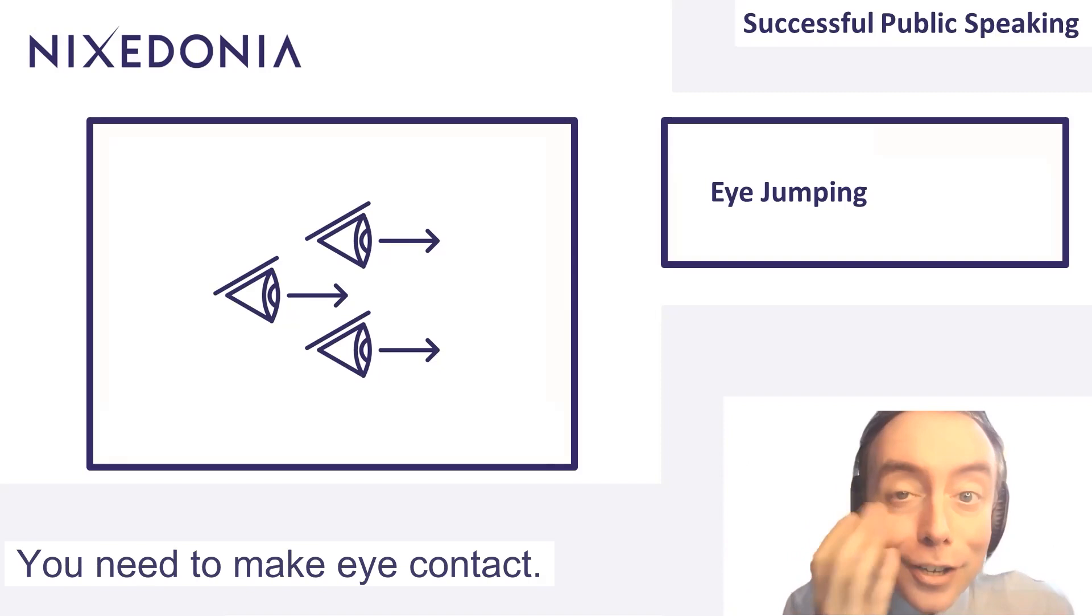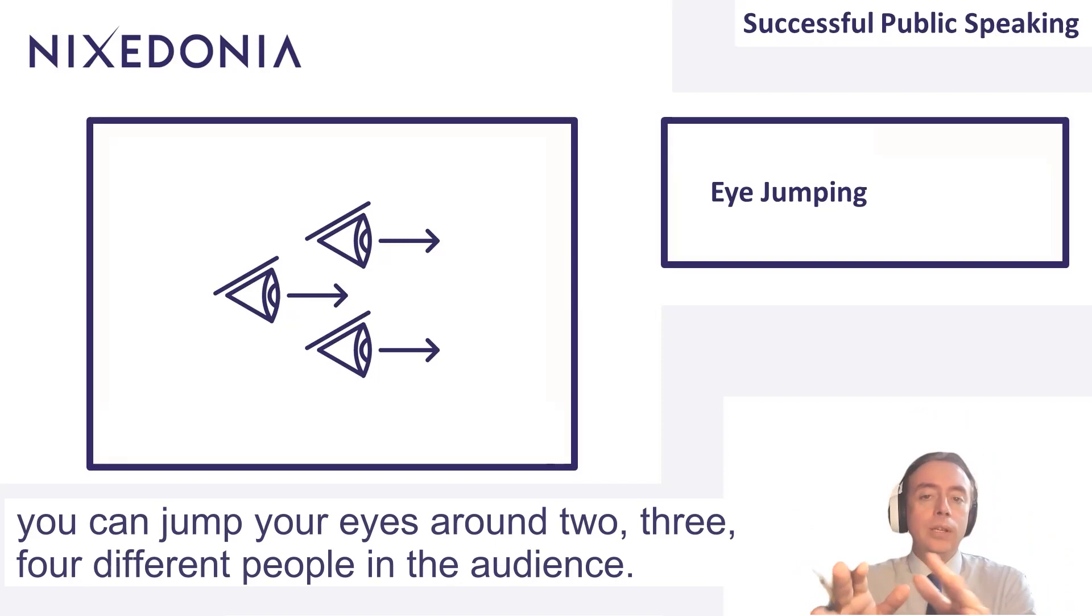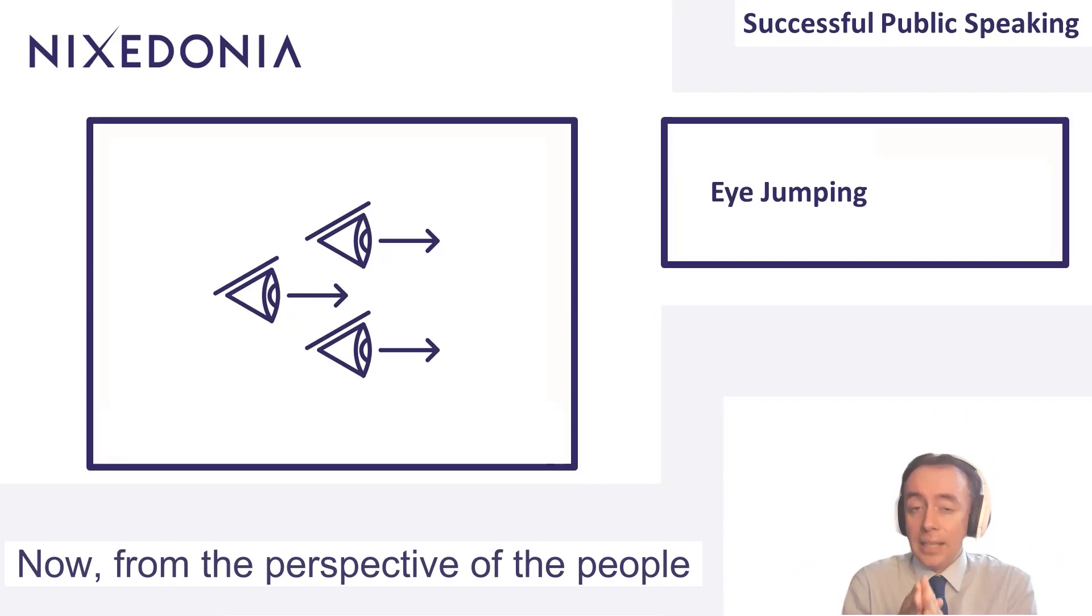You need to make eye contact. A nice trick you can do is called eye jumping. As you're talking to the audience, you can jump your eyes around to two, three, four different people in the audience.